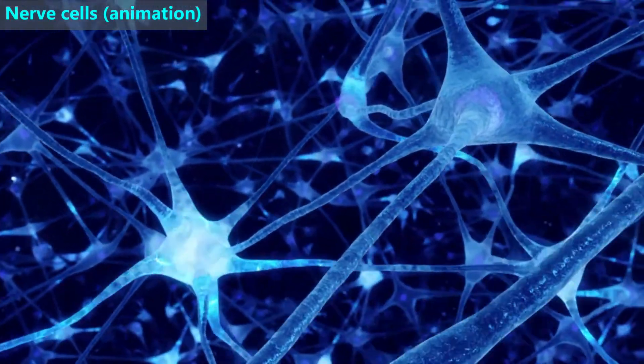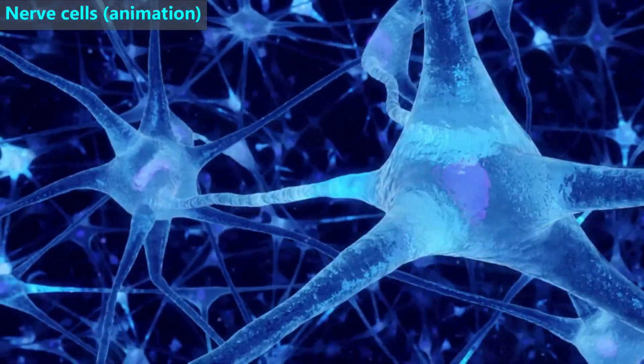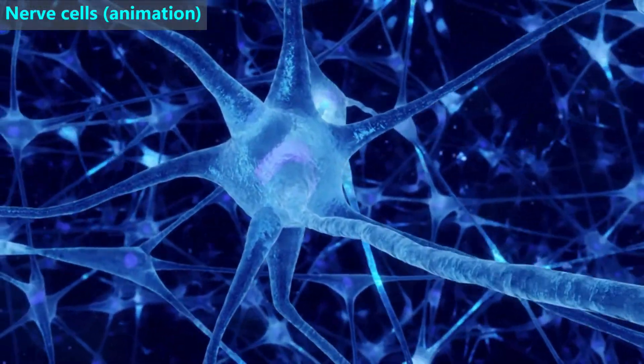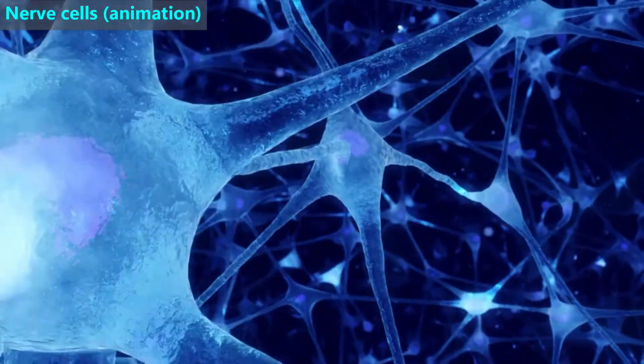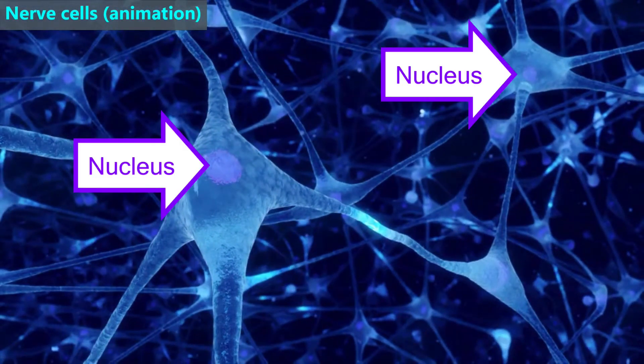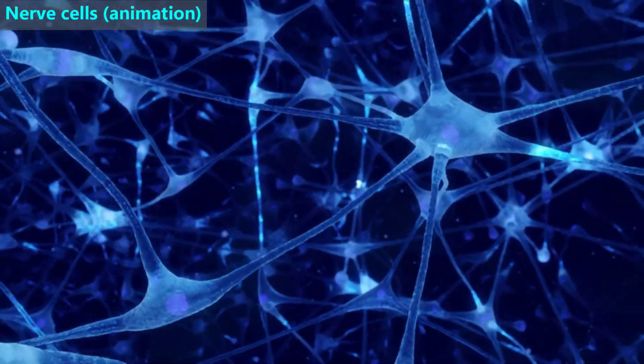Animals, which includes humans, are much more complicated than plants. So animals have many different cell types. For example, this animation shows nerve cells. They do many things, including let us think and move our arms and legs.